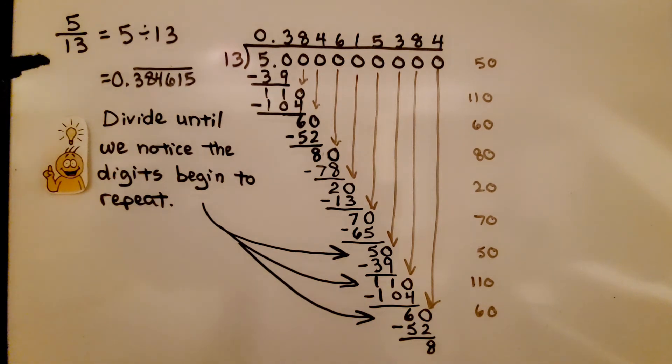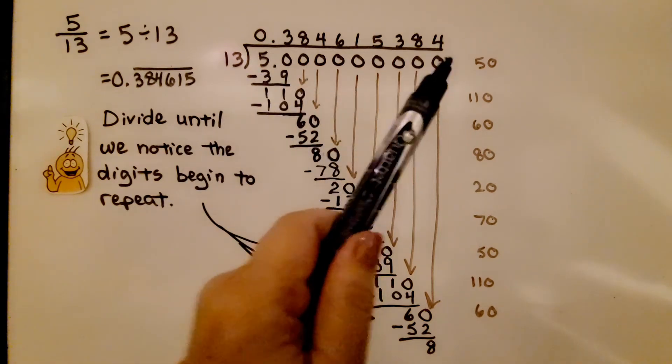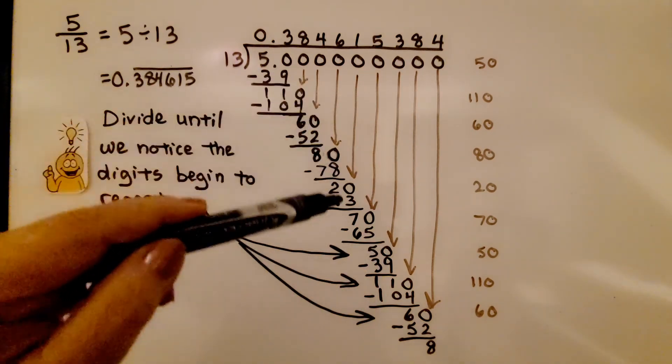We write a bar only on top of the digits that are repeating. For 5/13, we do 5 divided by 13, and look at all the zeros I had to add, and I had to keep dropping the zeros down.